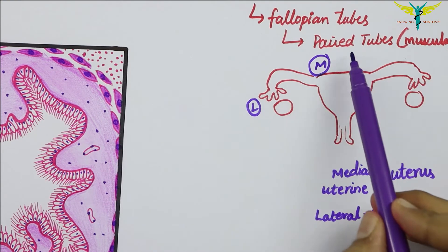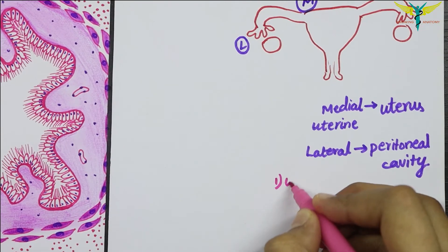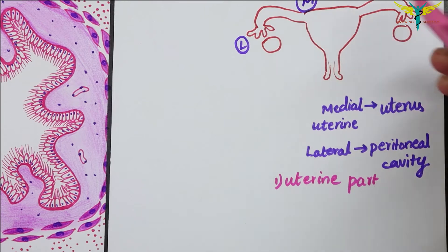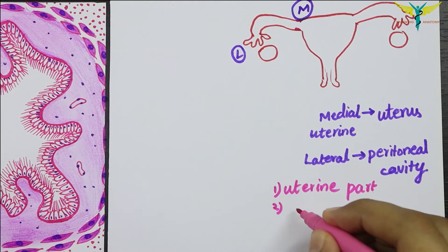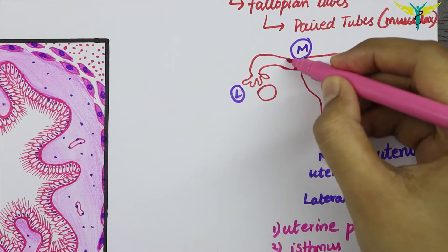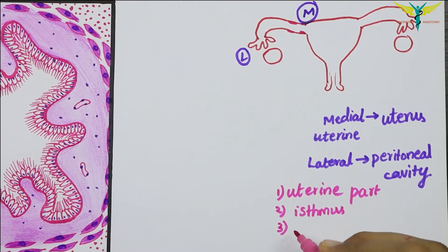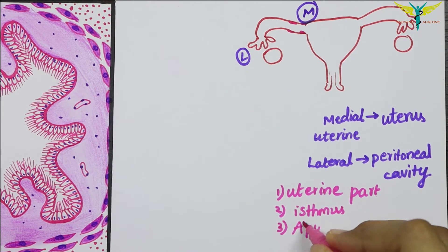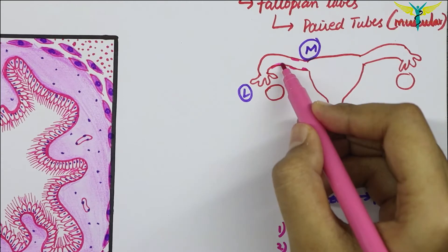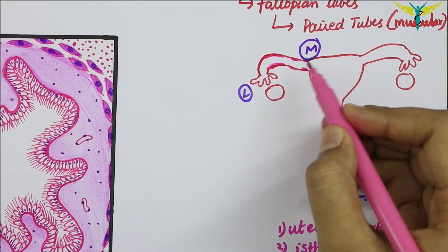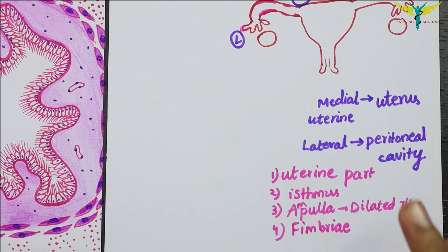These fallopian tubes are paired muscular tubes and the uterine tube has the following parts: first is the uterine part, which passes through the thick uterine wall; the second is the relatively narrow, thick-walled part called the isthmus; the third is the thin-walled dilated part called the ampulla; and the fourth part is the fimbria — these finger-like projections.